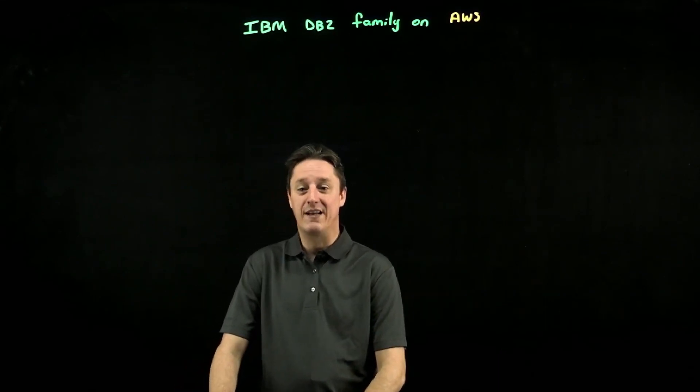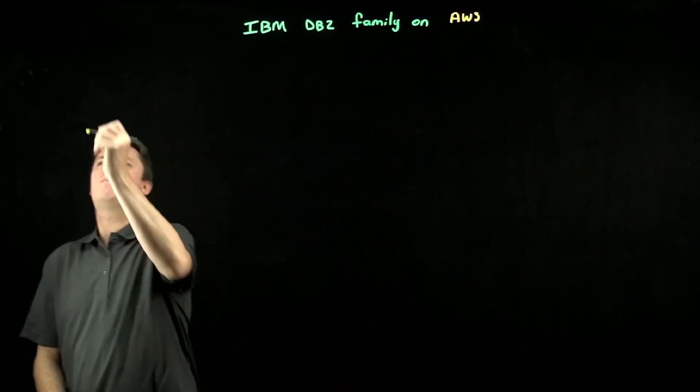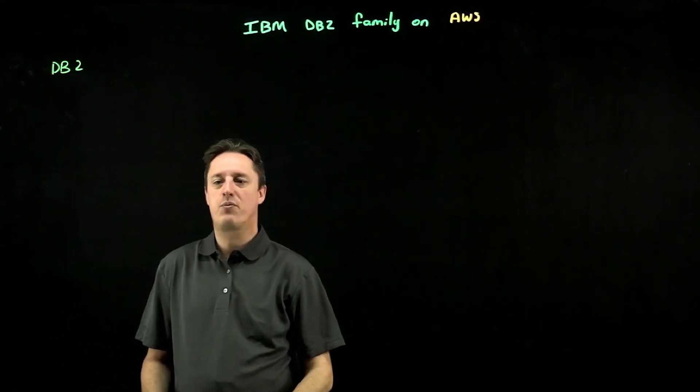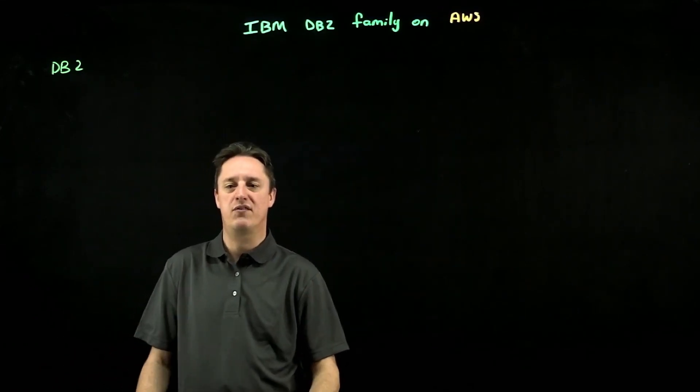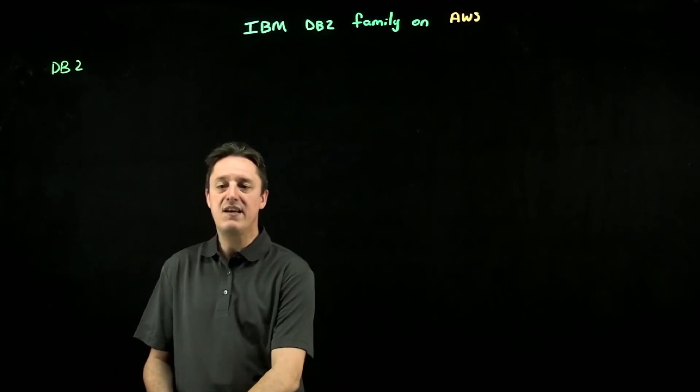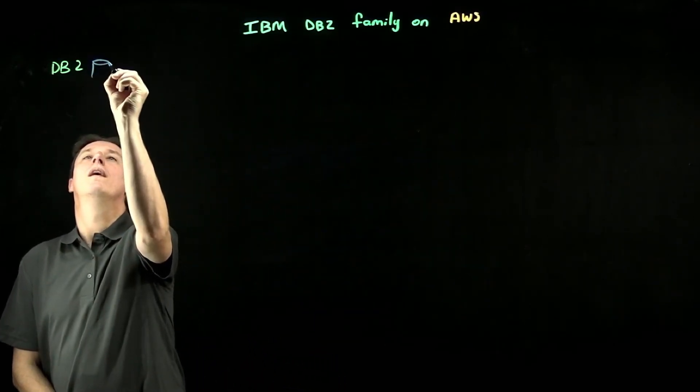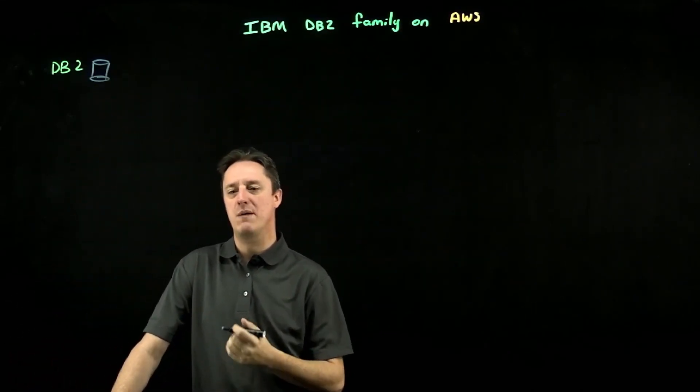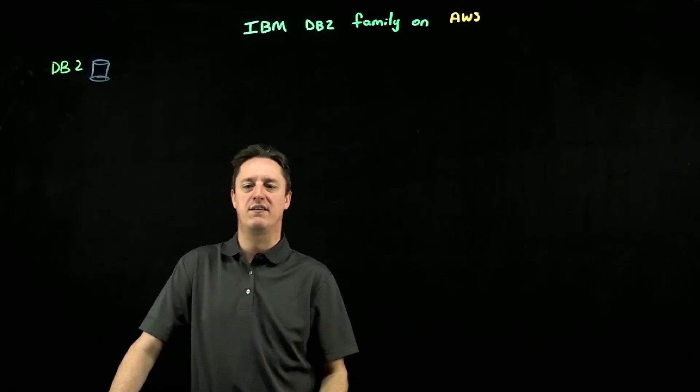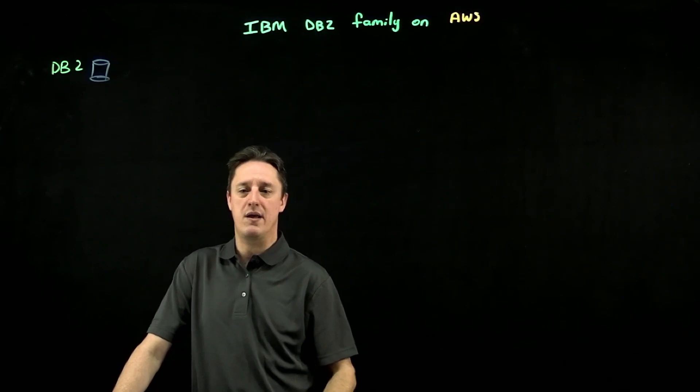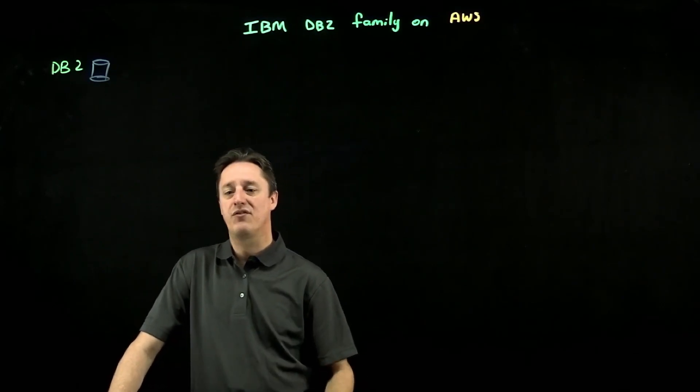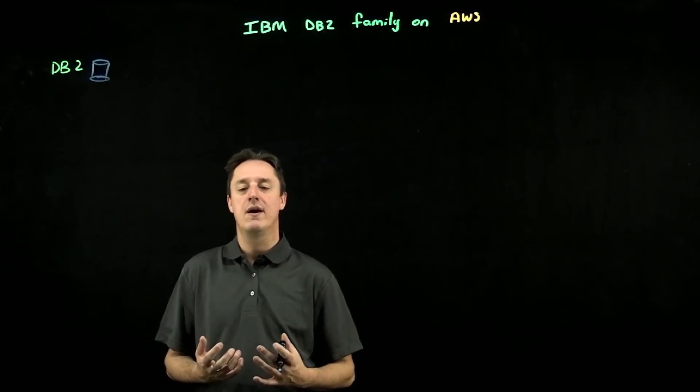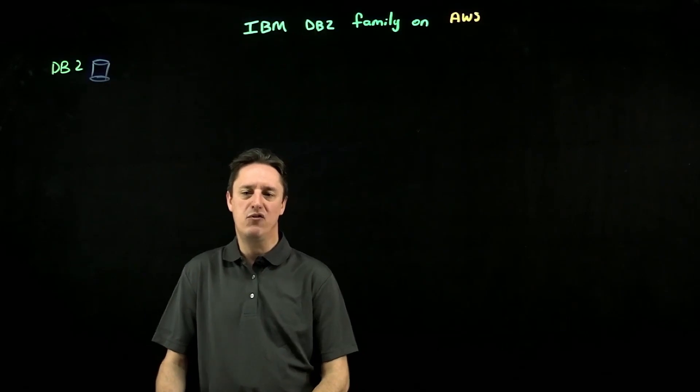The first question I'm probably going to get is: what is DB2? IBM's DB2 is a relational database product that has been around for many years. Many of the customers I work with have an existing deep investment in DB2 as a relational database platform. They're using it in an on-premises context—it might be running on physical servers, on a virtualization stack, or even on a mainframe implementation. As those customers migrate workloads to AWS, one of the questions I get is how do I bring my existing IBM DB2 investment from on-premises to AWS.